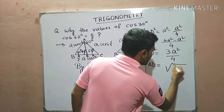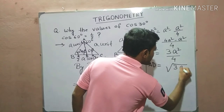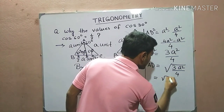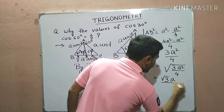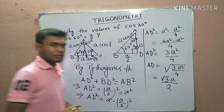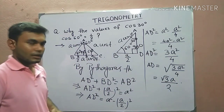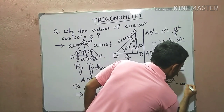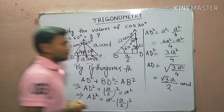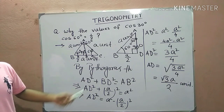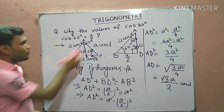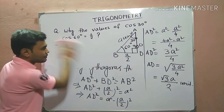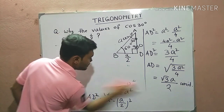For finding the value of AD, it would be the square root of 3a squared by 4, which means AD equals root 3 times a by 2. Now we know the values of AD, AB, and BD.